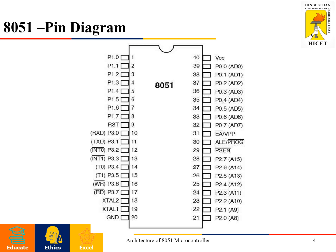Port 3 is on pin numbers 10 to 17. Along with Port 3, many control signals are available. Some of the control signals are RXD, TXD, INT0, INT1, T0, and T1. T0 and T1 are for timer control, and read/write control is also available here. Pin numbers 18 and 19 are for the crystal oscillator — XTAL1 and XTAL2.